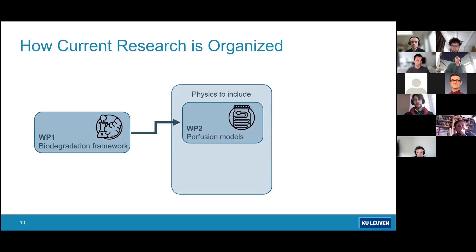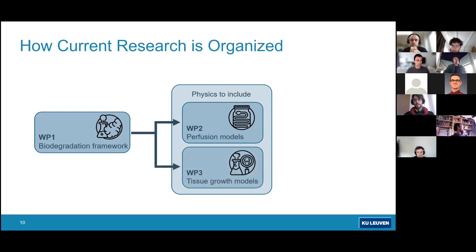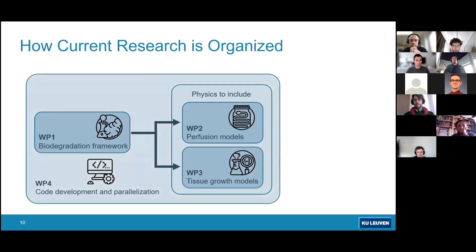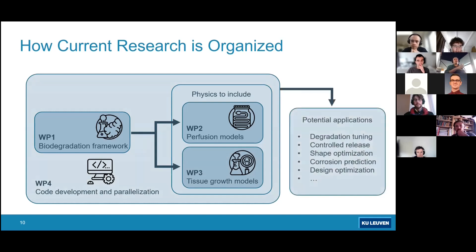In tissue engineering it's common to study cell culture conditions and cell proliferation inside a device called a bioreactor. When the bioreactor uses fluid flow to remove waste and add nutrients it is called perfusion. To capture this, fluid flow models were added to the core model. Work package 3 added tissue growth models, and work package 4 focused on code development and parallelization. The framework was initially developed for orthopedic biodegradation but can be generalized for shape optimization, topology optimization, corrosion tuning, and controlled release.